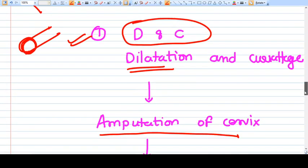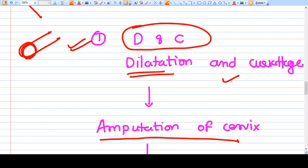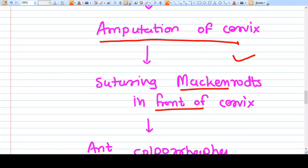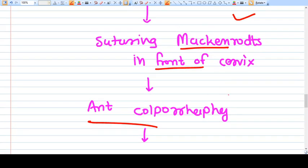And what is the Manchester operation? It is dilatation and curettage, amputation of the cervix, suturing the mackenrodt ligament in front of the cervix, anterior and posterior colporrhaphy. Why we are doing this? We just want to strengthen the already existing support which is the mackenrodt ligament. And what we achieve in this surgery? We achieve a very good amount of support for the uterus, we remove the extra cervix, we preserve the uterus but we lose the reproductive function.